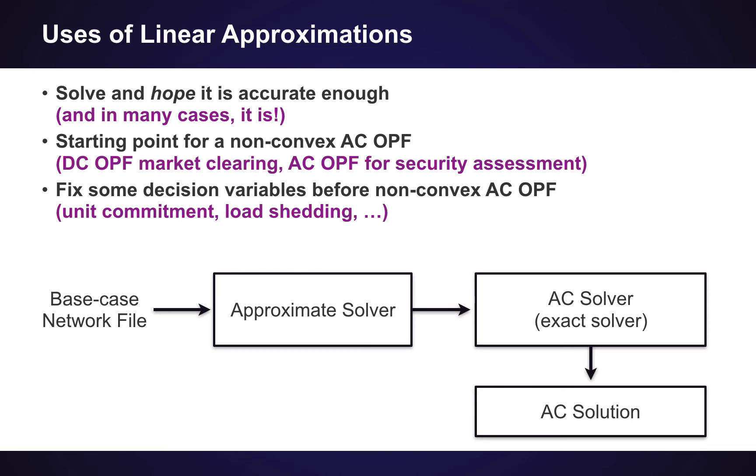Another use of the linear approximations is to fix some decision variables before we solve a non-convex AC optimal power flow problem. So for example, you could imagine solving a unit commitment problem where you include a linear approximation of the AC power flow constraints just to fix the decisions on generation on and off constraints and other integer variables, which you could then take those decisions and then include them, fix them before you solve the non-convex AC OPF. So that is kind of a typical flow here. You would have sort of a base case network file, which you would feed into one of those approximate solvers based on the linear approximations. And then you would take the solution, you would use an exact solver which takes into account the full AC optimal power flow constraints, which will give you an AC feasible solution.